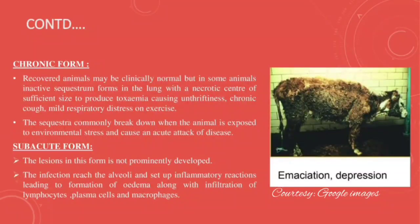Number three is the chronic form. Recovered animals may be clinically normal, but in some animals, inactive sequestra form in the lungs with a necrotic center of sufficient size to produce toxemia, causing unthriftiness, chronic cough, and mild respiratory distress on exercise. The sequestra commonly break down when the animal is exposed to environmental stress, causing an acute attack of the disease. Number four is the subacute form. Lesions in this form are not prominent. Infections reach the alveoli, setting up inflammatory reactions leading to formation of edema, along with infiltration of lymphocytes, plasma cells, and macrophages.